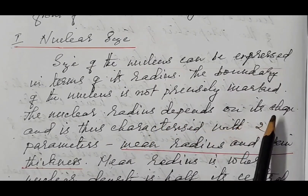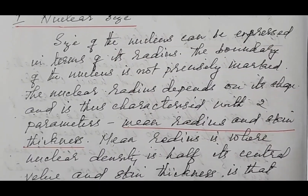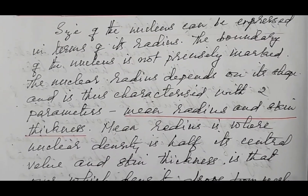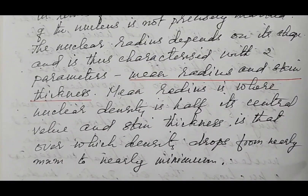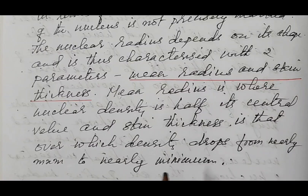The nuclear radius depends on its shape and is thus characterized by two parameters: mean radius and skin thickness. Mean radius is where the nuclear density is half its central value. Skin thickness is the distance over which density drops from nearly maximum to nearly minimum. The density of the nucleus at the center is uniform and maximum, and it decreases approaching the boundary. We can discuss this further with the help of a diagram.